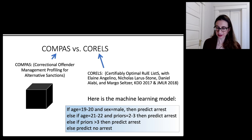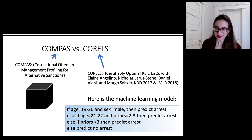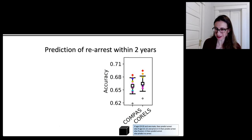The CORELS model says: if you are 19 to 20 years old and male, predict arrest within two years of your COMPAS score calculation. If you're a little older with two to three prior offenses, predict arrest within two years. If you have more than three priors, predict arrest. Otherwise, predict no arrest. We looked at this model and thought there is no way this could be as accurate as COMPAS — but as it turns out, it was. And this was really surprising.